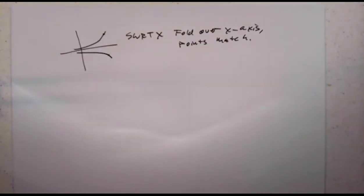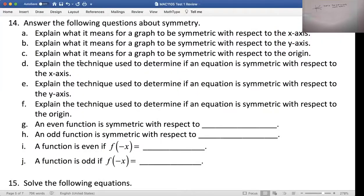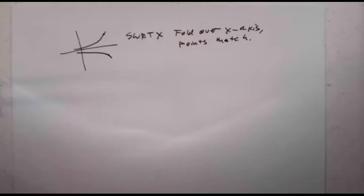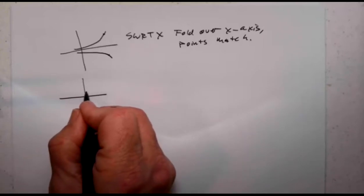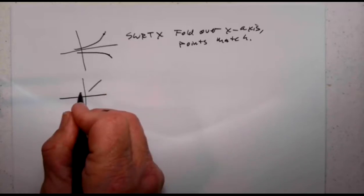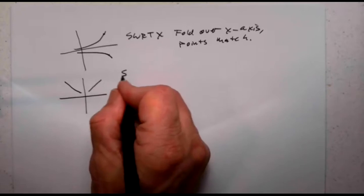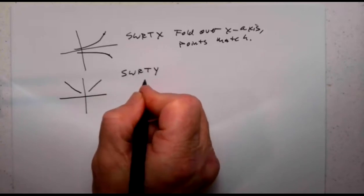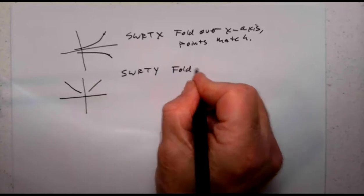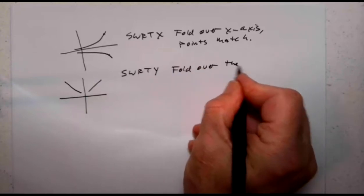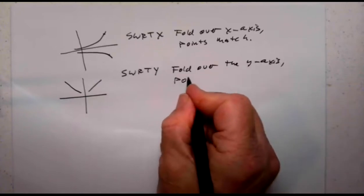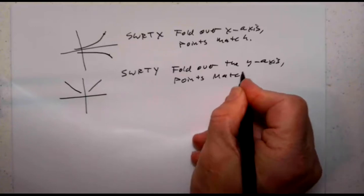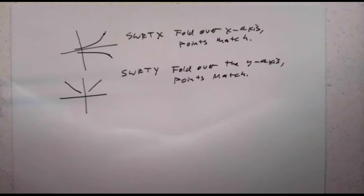The next question asks what it means to be symmetric with respect to the y-axis. Same argument — if I have something here, I have to have the equivalent thing over on that side. Symmetric with respect to the y-axis means if I fold over the y-axis, the points match. You should be able to look at graphs and determine whether they are symmetric with respect to the y-axis or the x-axis.